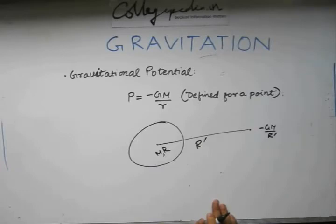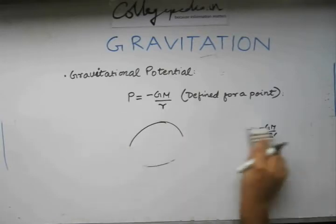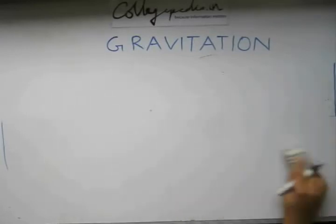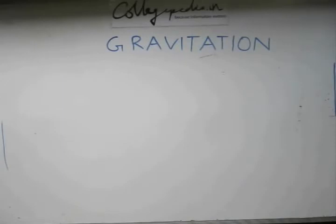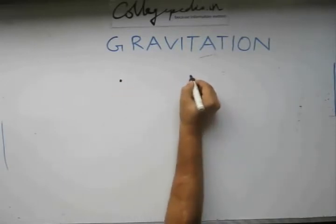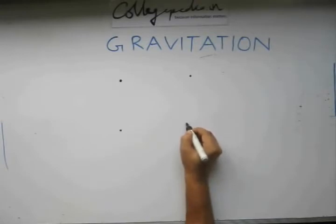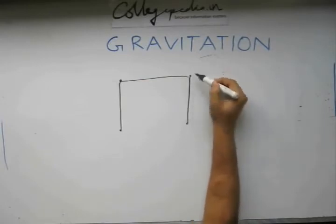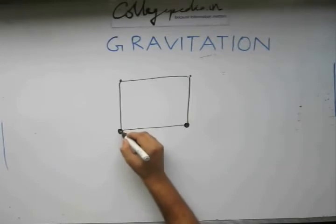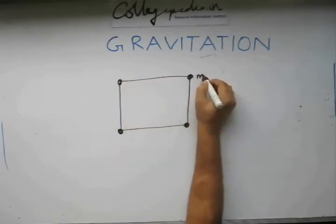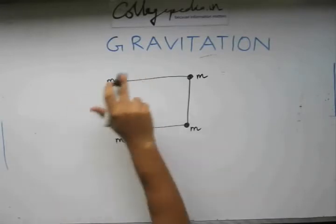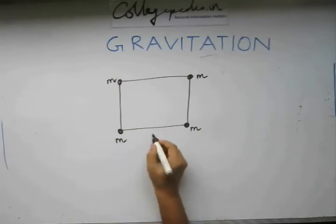This is also a scalar quantity. Now let us look at a small problem related to gravitational potential and potential energy. We have 4 point masses located on the corners of a square, each having a mass m. We need to find out the gravitational potential energy of the system. The side of the square is a.